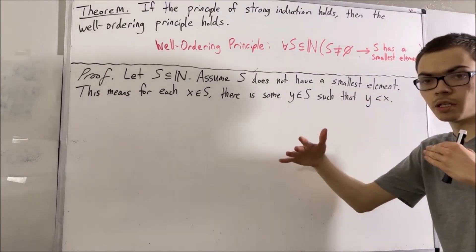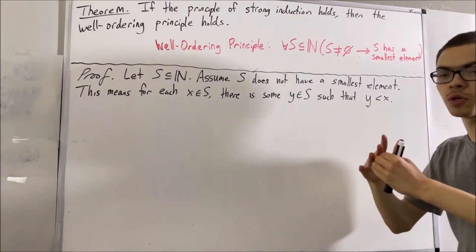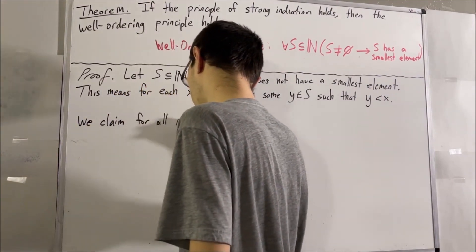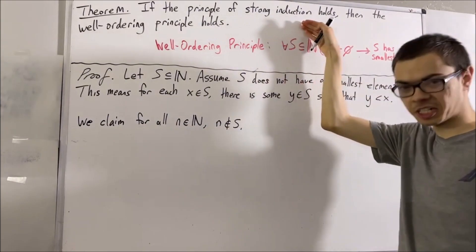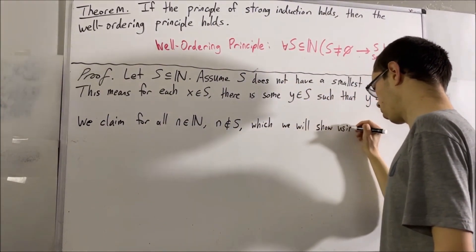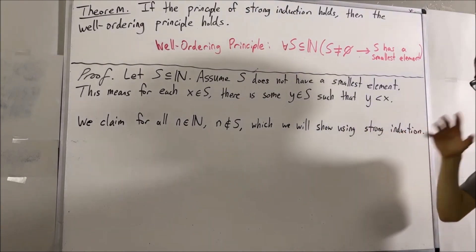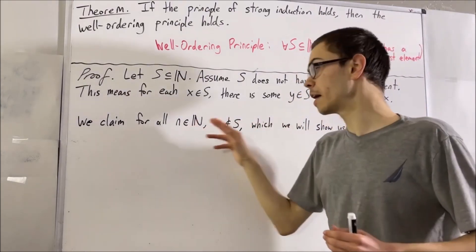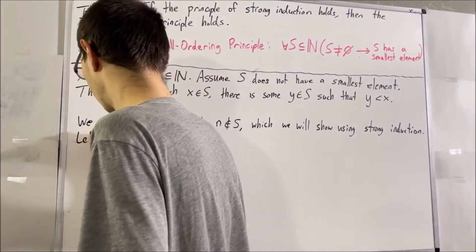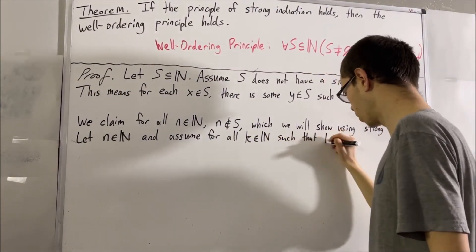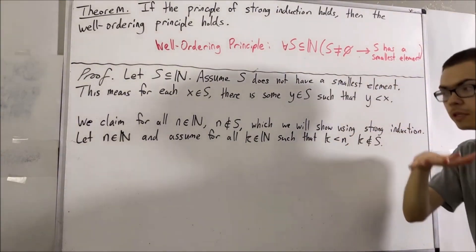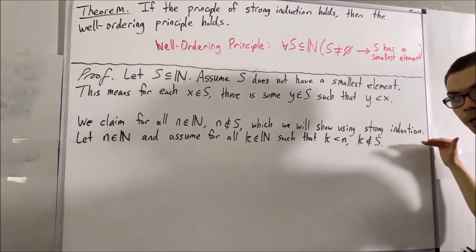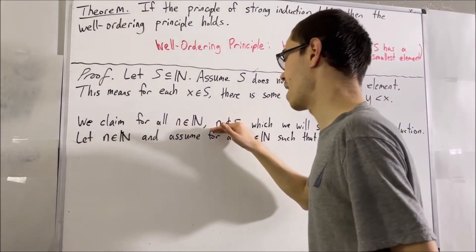We want to show that S is empty. Our claim is that for all natural numbers N, N is not an element of S. And we're going to prove this by strong induction. To apply strong induction, we're going to give ourselves an arbitrary natural number N, and we're going to assume for all natural numbers K less than N, K is not an element of S. Our goal now is to prove that N is also not an element of S. If we can do that, then by strong induction, it will follow that for all natural numbers N, N is not an element of S.